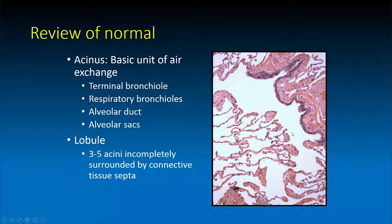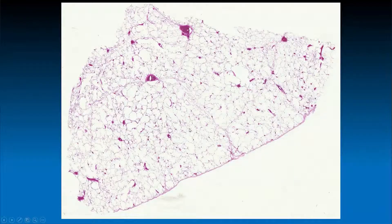The lobule of the lung is comprised of three to five of these acinar structures in aggregate, which are together and completely surrounded by connective tissue septa. The lobule of the lung can be seen here at this scanning image of a relatively normal appearing section of lung.